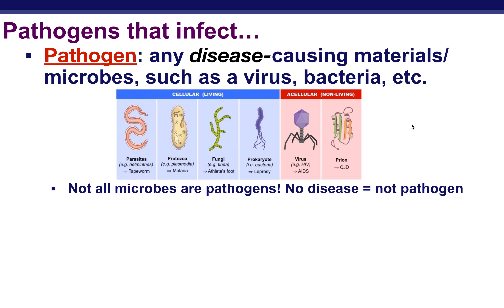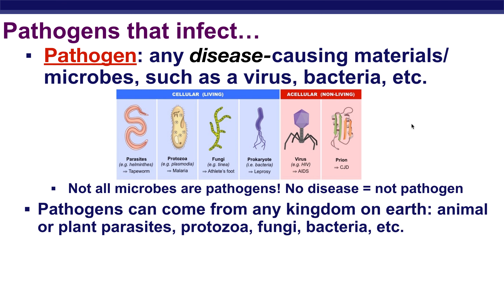Not all microbes are pathogens. If it doesn't cause disease, it's not a pathogen. You have a lot of viruses, bacteria, yeast, and protozoa that live inside your body that cause no issues whatsoever, so we wouldn't classify those as pathogens. A pathogen can come from any kingdom on earth — animals and plants can be parasitic and live inside your body and cause issues. You can also have protozoa, fungi, and bacteria that cause similar issues.